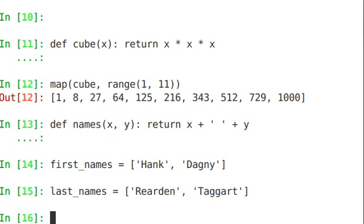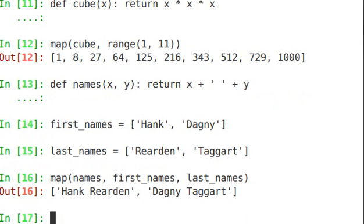So if I want to join these two together, I can simply say map, and then the function names, and now I can pass two different sequences. First names, last names, and we got a list back that joined the first and last names together. This is a lot easier than creating a whole for loop and creating an empty list and appending on to that list.